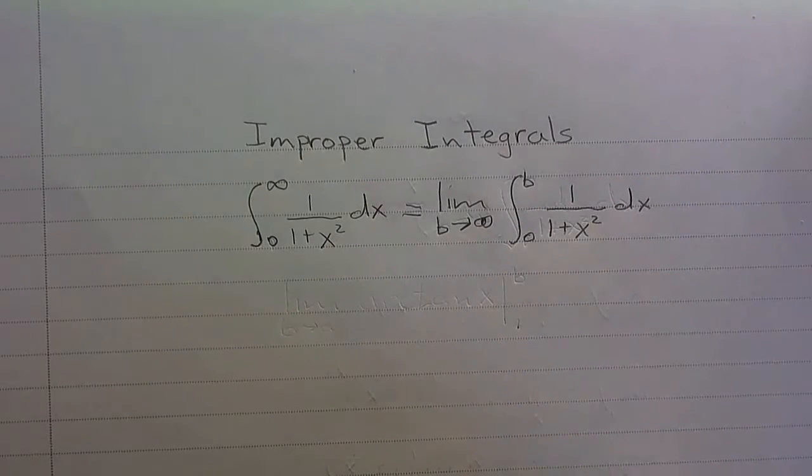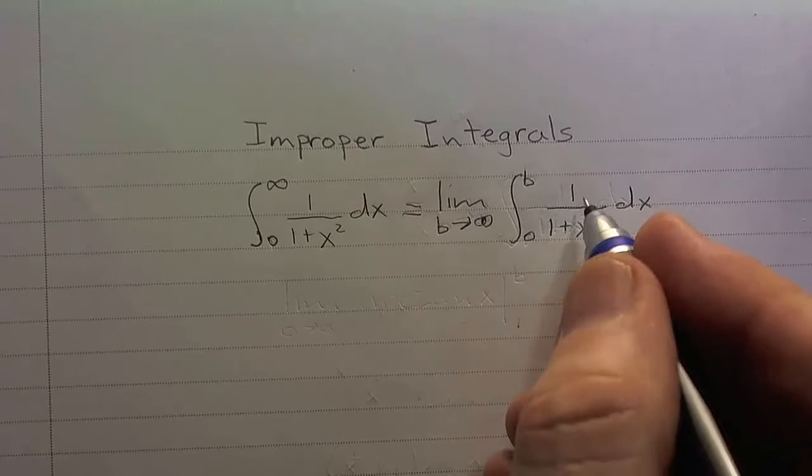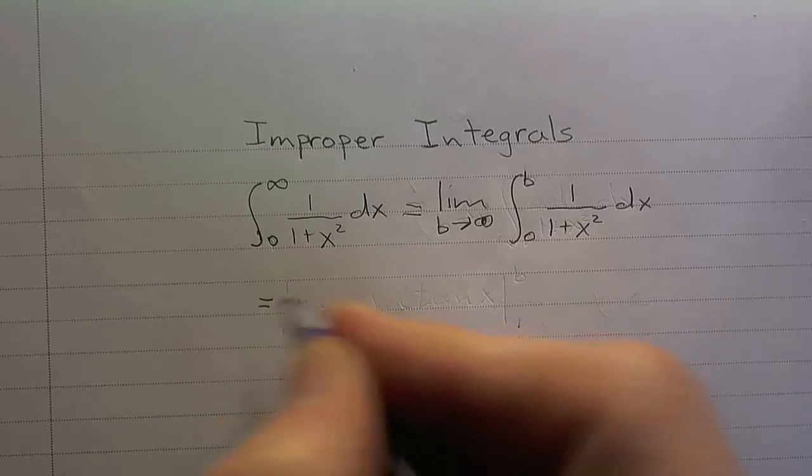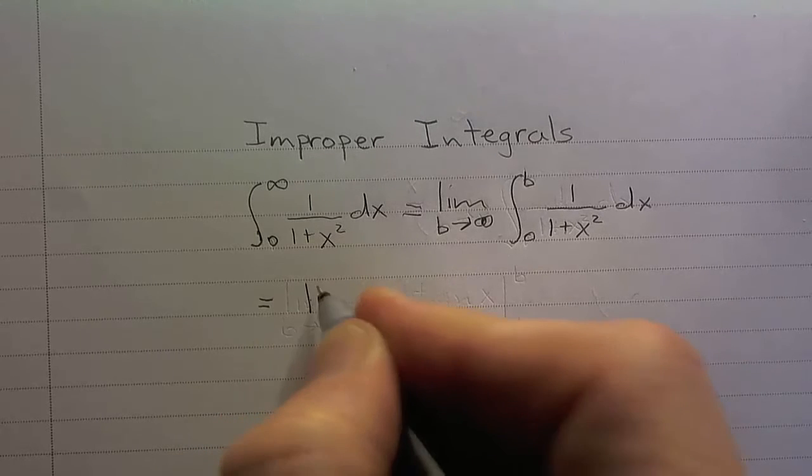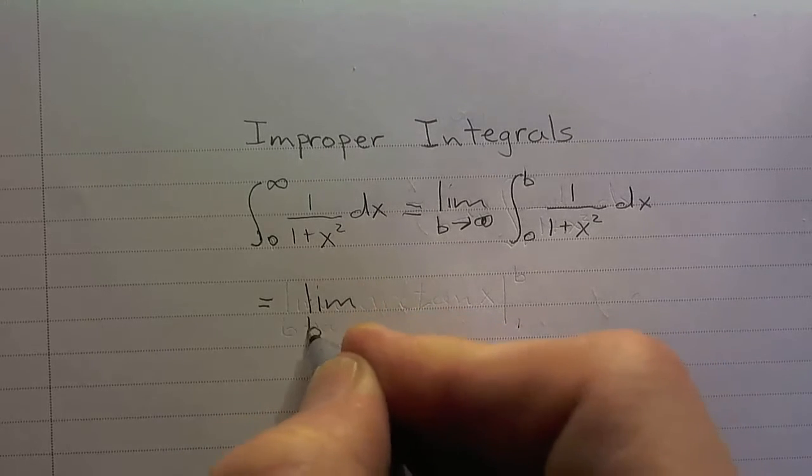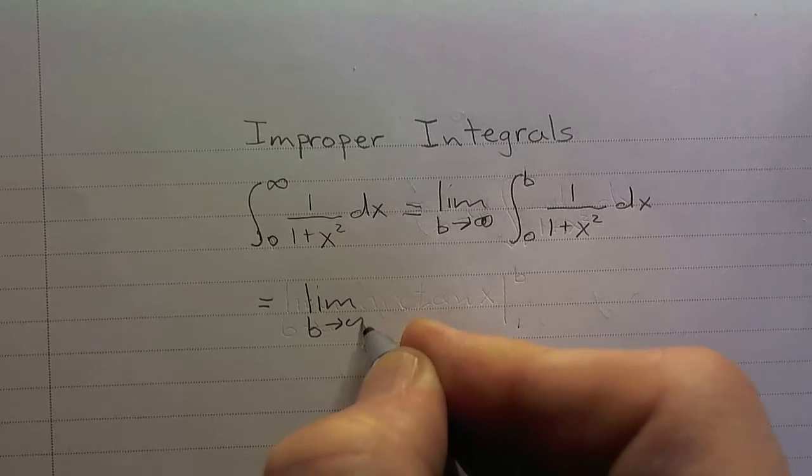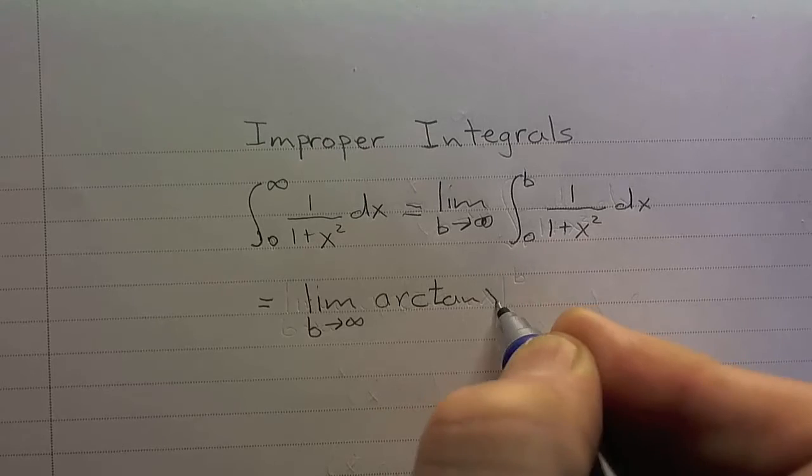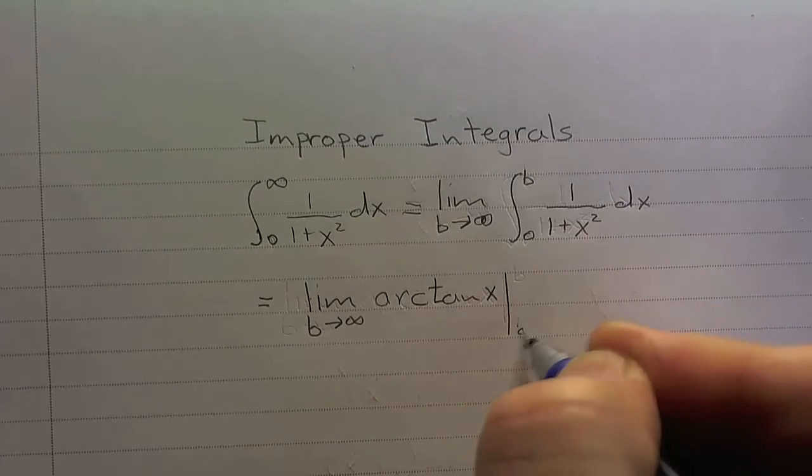So let's see what this is going to look like. Now, you may recognize that 1 over 1 plus x squared, that is the derivative of arctangent. So what we have now is we have the limit as b goes to infinity of arctan from 0 to b.